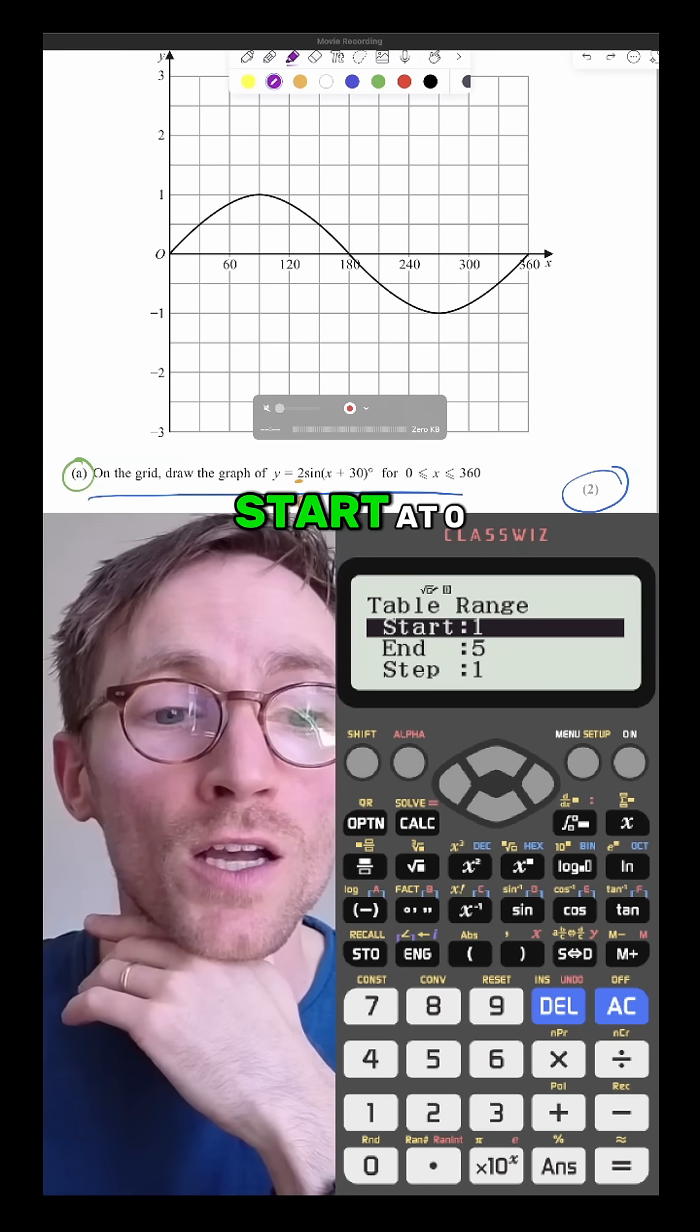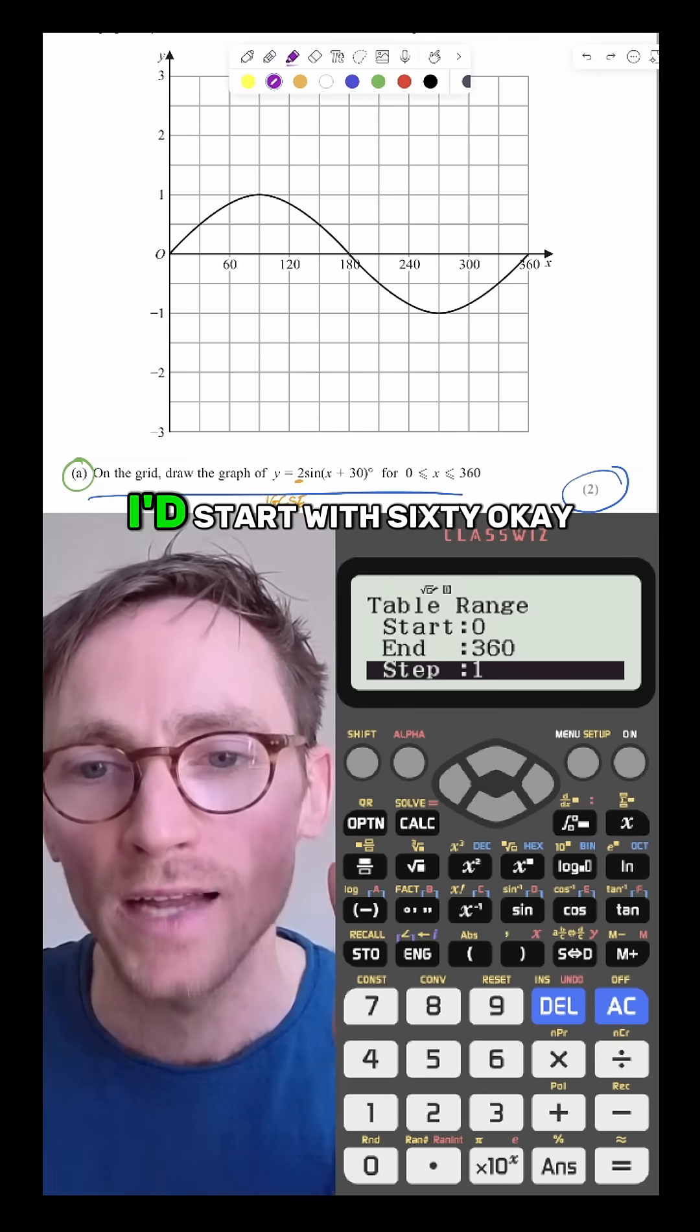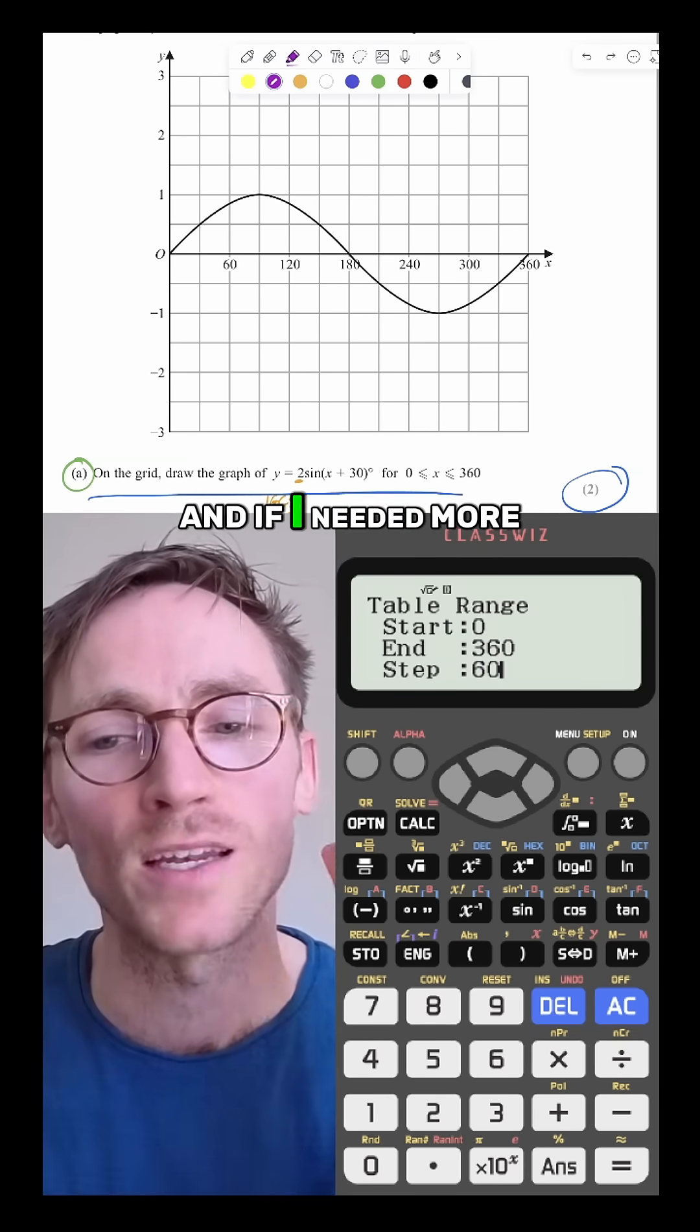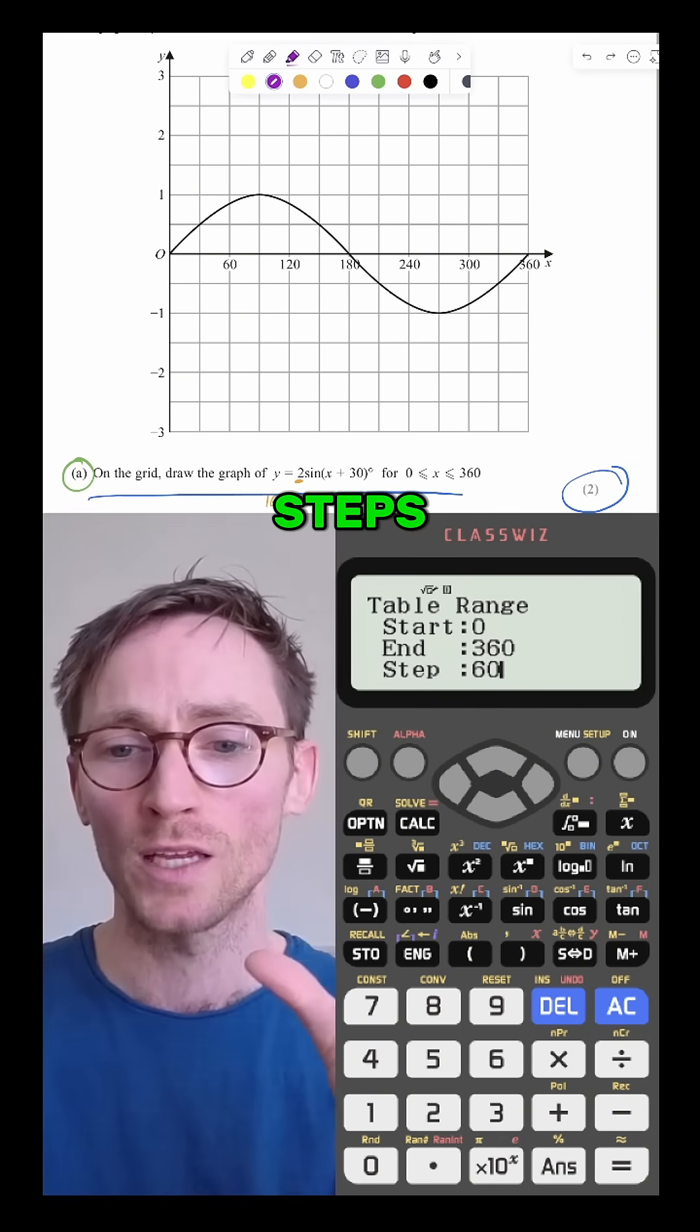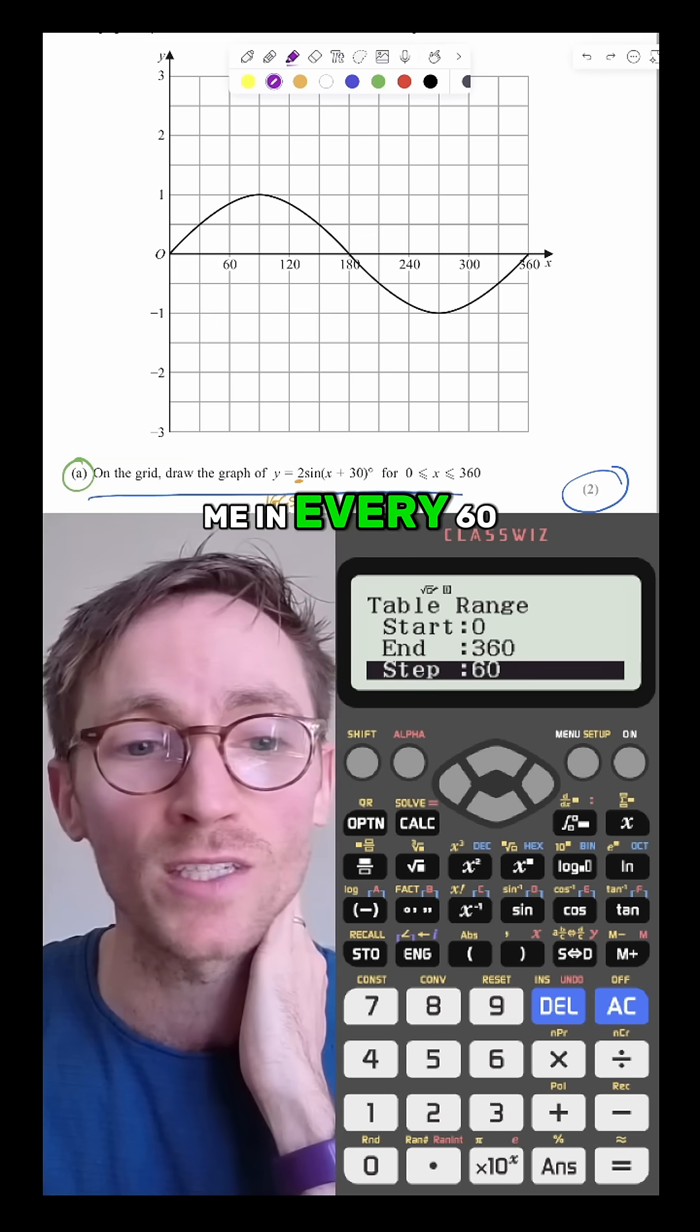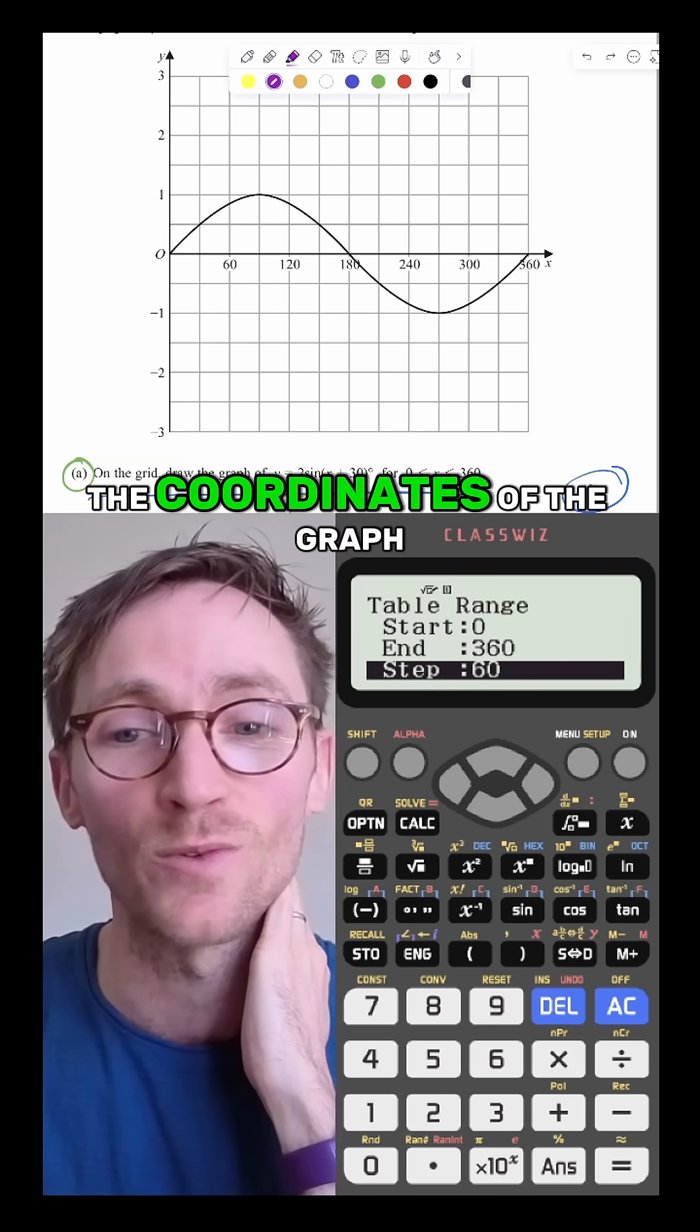Table range, so start at 0, end at 360. I'd start with 60, okay. And if I needed more information I'd come back here and change it to 30, so it would be more steps, but let's do 60. So this is just going to tell me every 60 it's going to just tell me the coordinates of the graph.